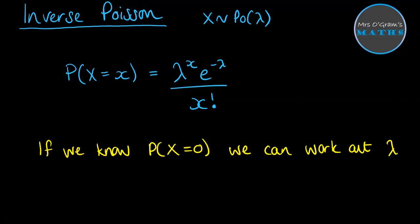If this was working out the probability that x equals 0, this would be 0 and so would this. Anything to the power of 0 just becomes 1, and 0 factorial is also 1. So we end up with it just being equal to e to the minus lambda. E to the minus lambda becomes equal to our probability that x equals 0, and that is much easier to solve.